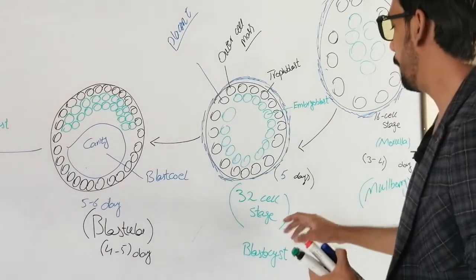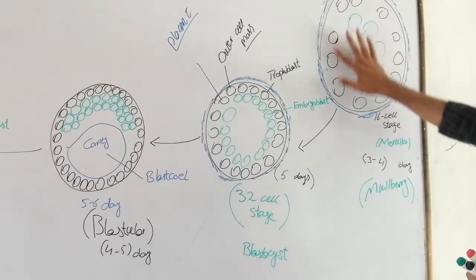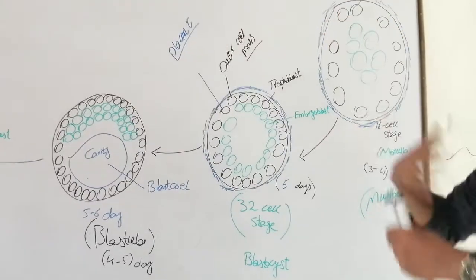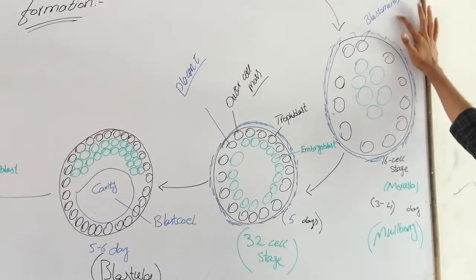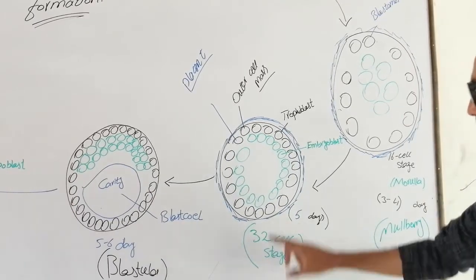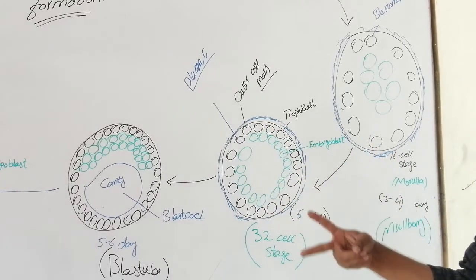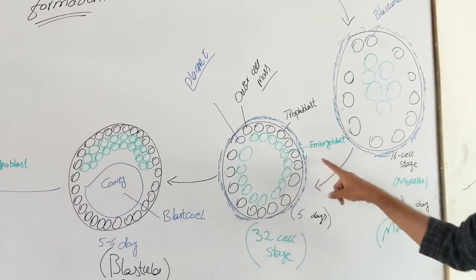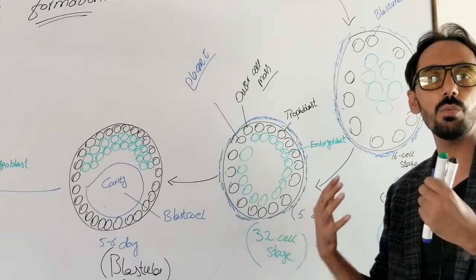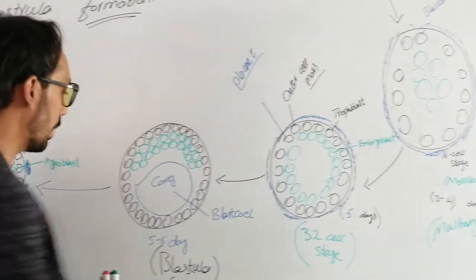This 32-cell stage is called the blastocyst. All the cells formed after cleavage are called blastomeres. The 32-cell stage is called the blastula, and this structure is called the blastocyst. The blastocyst has two different types of cells: trophoblast and embryoblast. The embryoblast is responsible for making different membranes and structures of the baby, while the trophoblast handles nutrition, gaseous exchange, and waste excretion.